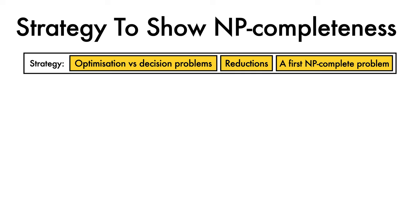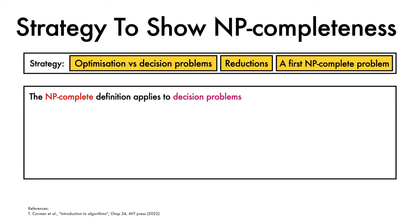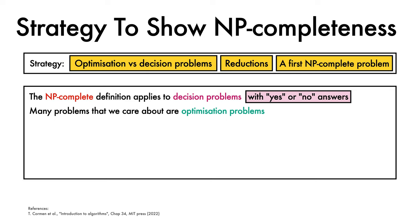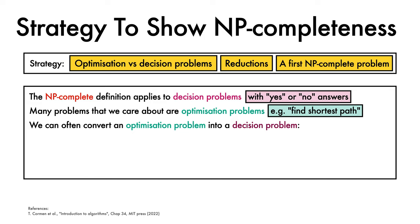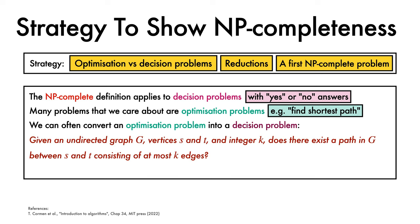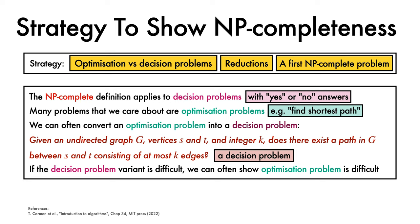Let's start with the first concept. The NP-complete definition applies to decision problems with yes or no answers. However, many problems we care about are optimisation problems, such as finding the shortest path on an undirected graph. Thankfully, we can often convert an optimisation problem into a decision problem. For example, rather than finding the shortest path, we can ask: given an undirected graph G, vertices s and t, and integer k, does there exist a path between s and t consisting of at most k edges? If we can show that the decision problem variant is difficult, we can often show that the optimisation problem variant is difficult as well.